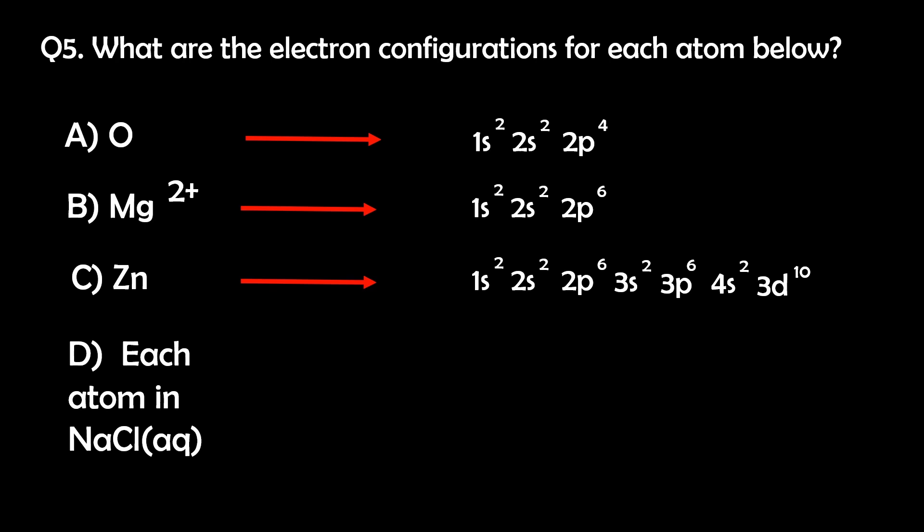For sodium chloride, we have an Aq symbol, which means this molecule is in water. And we know that if sodium chloride is in water, it would dissociate. So we have two ions. Sodium with a plus 1 charge and chlorine with a negative charge.